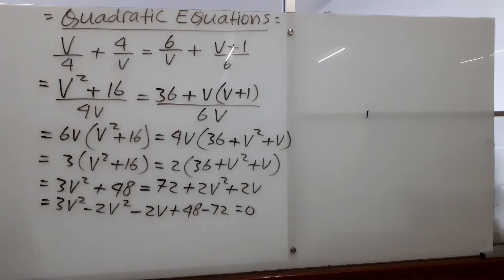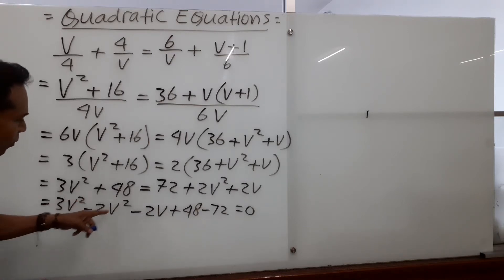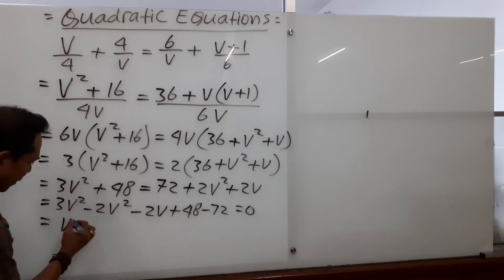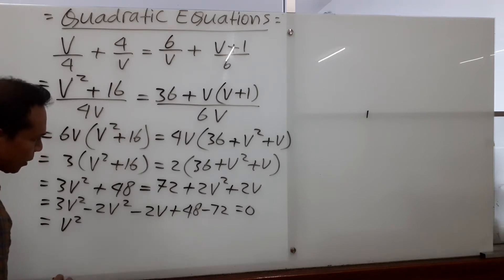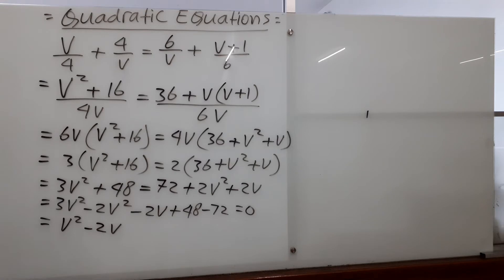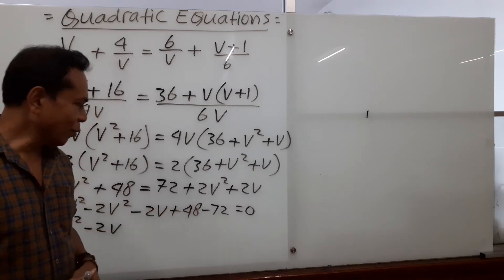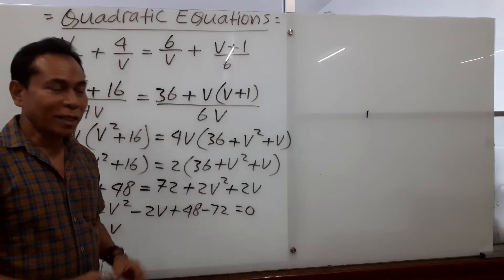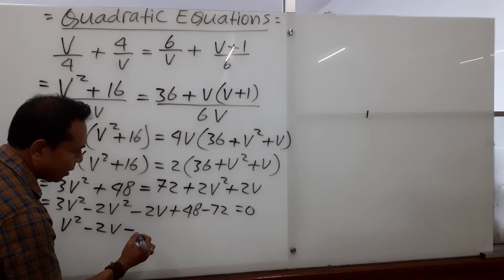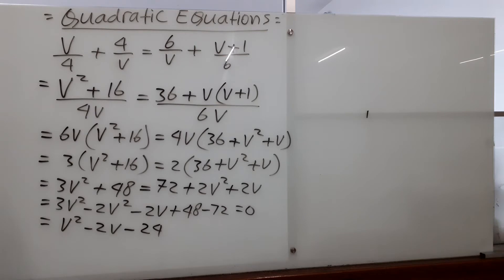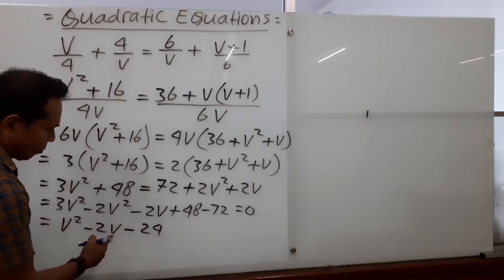We set everything equal to zero. Now we work through: 3v squared minus 2v squared gives us 1v squared, so we just write v squared. Then minus 2v stays as is. For 48 and 72, 72 is numerically larger and its sign is negative, so we subtract: 72 minus 48 gives 24, written as minus 24. So we get v squared minus 2v minus 24 equals 0.